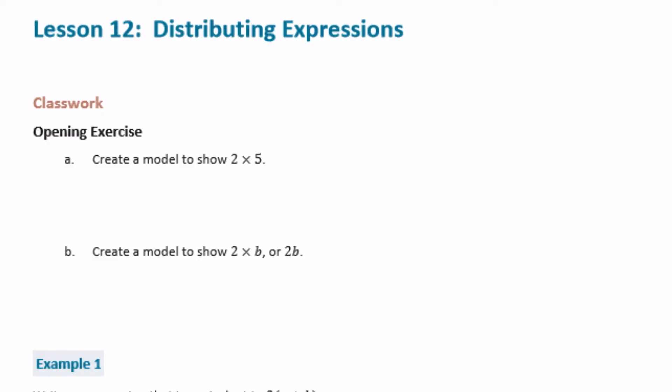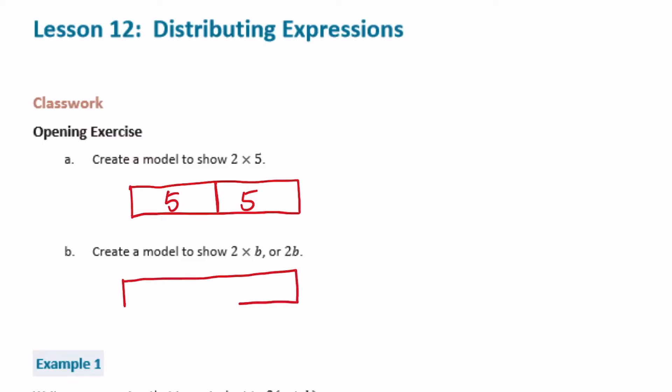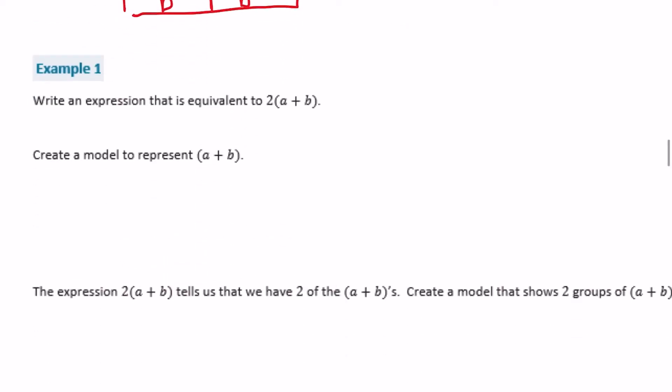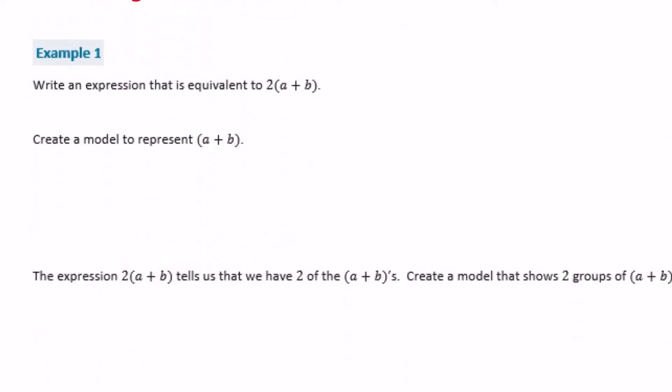6th grade module 4 lesson 12 classwork opening exercise. Create a model to show 2 times 5 — that means 2 groups of 5. Then create a model to show 2 times B, or 2B. We do the same thing, except instead of two 5's we have two B's.